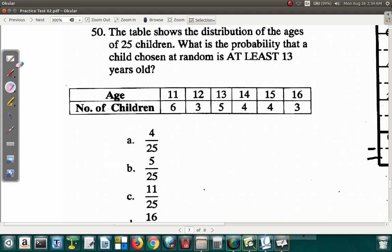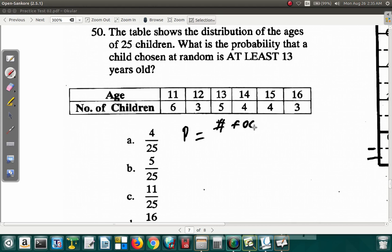A child chosen at random is at least 13 years old. At least 13 years old means that they can be 13 or older. The least is 13, no less than 13. At least means no less than. So how many of them? First of all, probability. Remember, it is the number that you want. Right? The number that you are looking at, the number that you're interested in. So the number that you focus on, the number that you're focusing on. Divide by the total number available. The total number available. Alright?